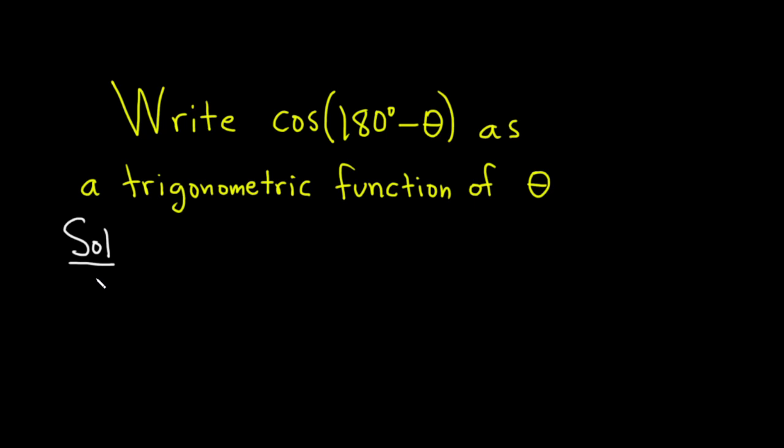So to do this problem we are going to use an identity. The identity says if you have the cosine of x minus y, this is equal to the cosine of x times the cosine of y, and that's plus - it's the opposite sign - and then that's sine x sine y.